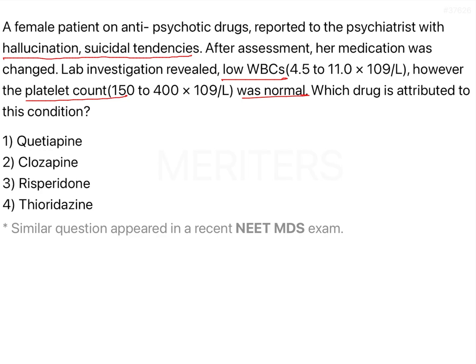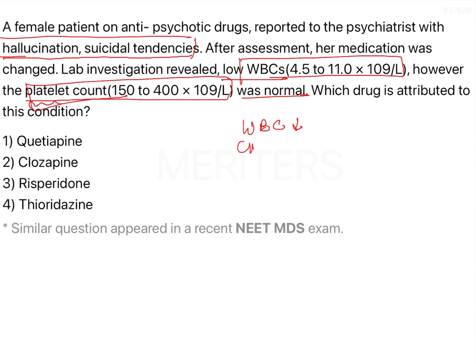Looking at the clues: the platelet count is normal but WBCs are getting low. The patient is also getting CNS symptoms. These two findings together are due to the use of a drug, so we have to find out the side effects of the drug being used — and that drug has to be an antipsychotic.